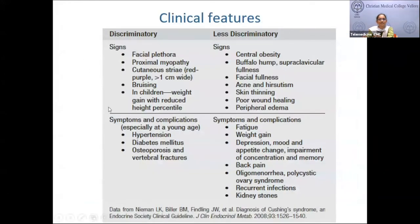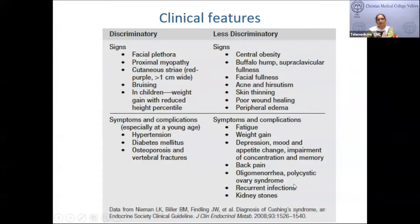The most discriminative clinical features are facial plethora, myopathy, cutaneous striae more than one centimeter wide, and thin skin leading to bruising. In children, classical features may be absent; they may just present with weight gain and reduced height percentile. Diabetes, hypertension, and osteoporosis are also more common in Cushing's. Less discriminatory features include central obesity, cervical fat pad, supraclavicular fullness, poor wound healing, peripheral edema, weight gain, depression, mood changes, oligomenorrhea, recurrent infections, and hypercalciuria predisposing to kidney stones.